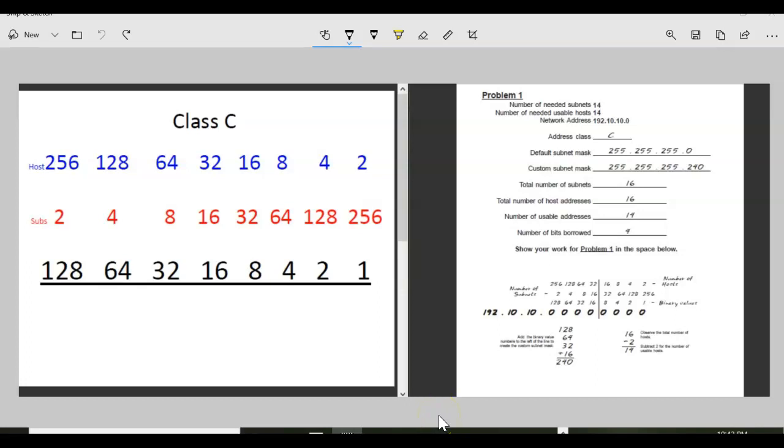So the last thing that we're going to do in CCNA1 is talk a little bit about subnetting. We've been able to classify our IP addresses either class A, B, or C.